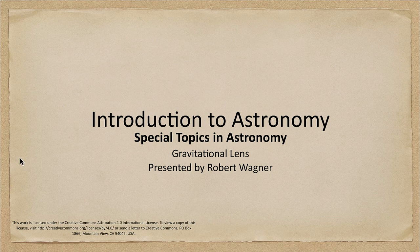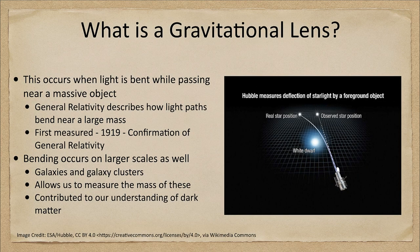So what is a gravitational lens? This occurs when light is bent by passing something with mass. It will occur with any object that has mass, however the greater the mass the more the deviation will be. This is a consequence of general relativity, which explains how light is bent as it passes near a large object.